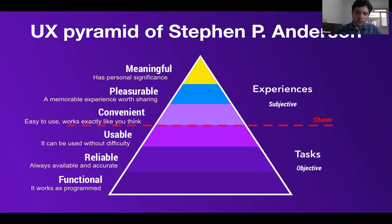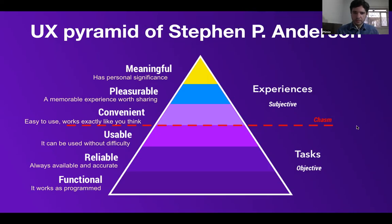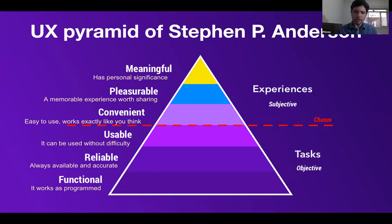Now I want to briefly talk about another topic, which is the UX pyramid of Stephen P. Anderson. I always like to talk about it because it's an interesting measure to validate where the product user experience is and what is still missing. At the base of the pyramid, we have products that are functional — products that work as programs but don't do much more than that. Up from there, we have products that can be classified as reliable — products that are always available and present accurate data and information to their users all the time. Then we have the usable products — products that can be used without difficulty.